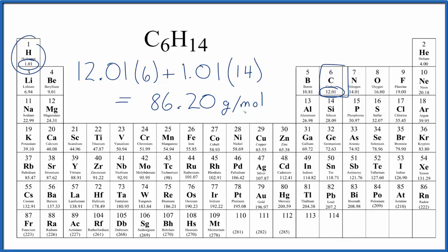What this means is if I have one mole of C6H14, it'll have a mass of 86.20 grams, or if I'm given 86.20 grams, I'll know that it's one mole of C6H14.